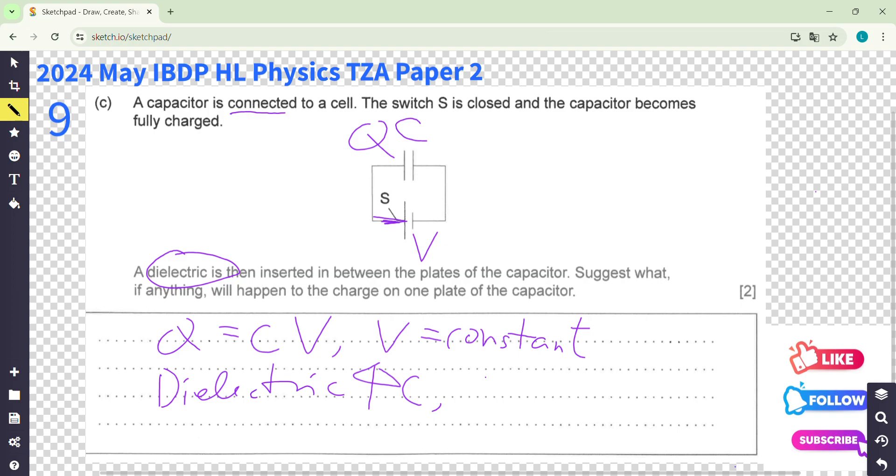And because V is a constant, Q is proportional to C. So Q will also increase with the capacitance, with the insertion of the dielectric.